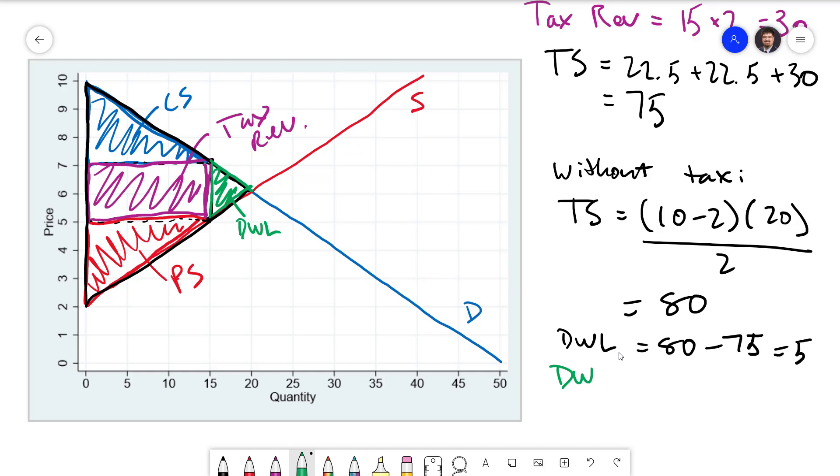We can also calculate that directly as a triangle. We'll think about this sideways again where the base is this distance right here, 7 minus 5 which of course is just 2, the size of the tax, and the height of the triangle is going to be this distance right here which is the loss in quantity due to the tax. So 20 minus 15 which is 5. Divide that by 2. What we end up with is 5. Either way it's going to get you the same answer.